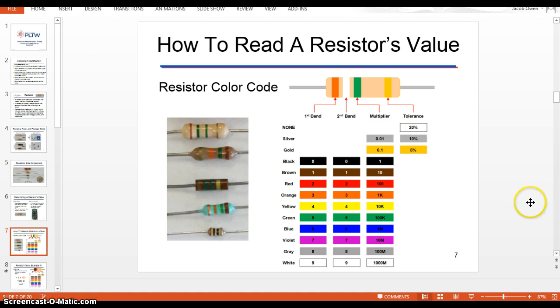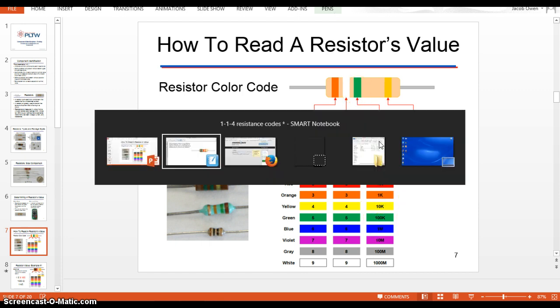And then the third stripe, the third color tells you, well they say multiplier, and that's right. That's really what you multiply the first two digits by to get the resistance. But the easiest way to remember it is, it's just how many zeros come afterwards. So if the last color, this right here is green, so that means that there are five zeros to come after the orange.